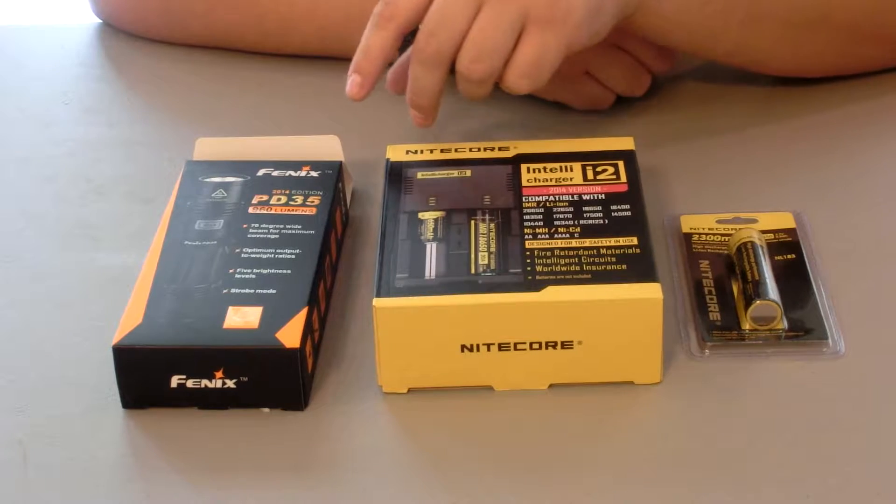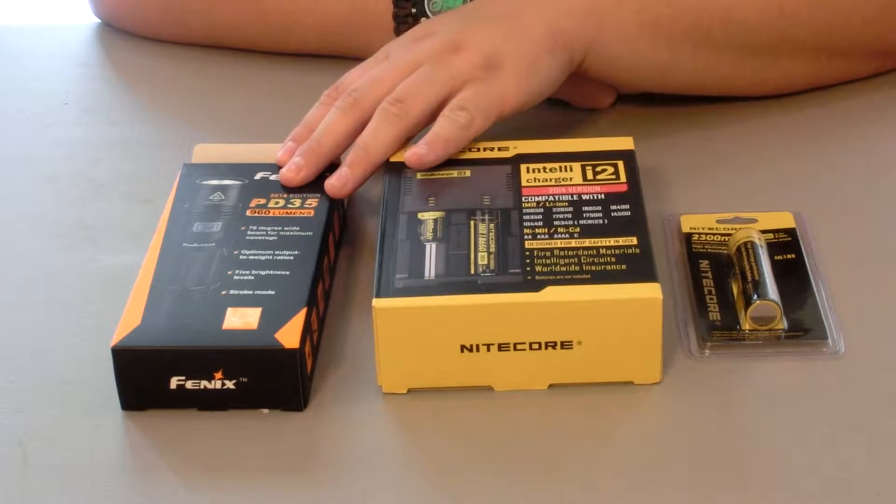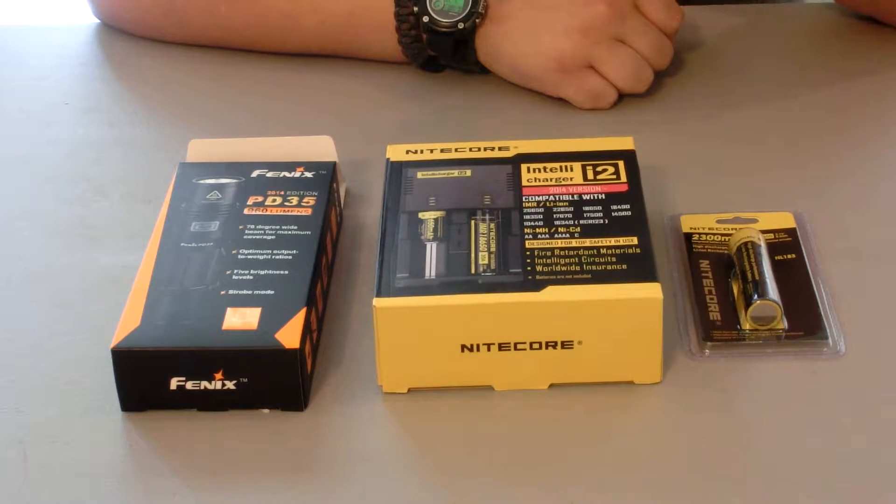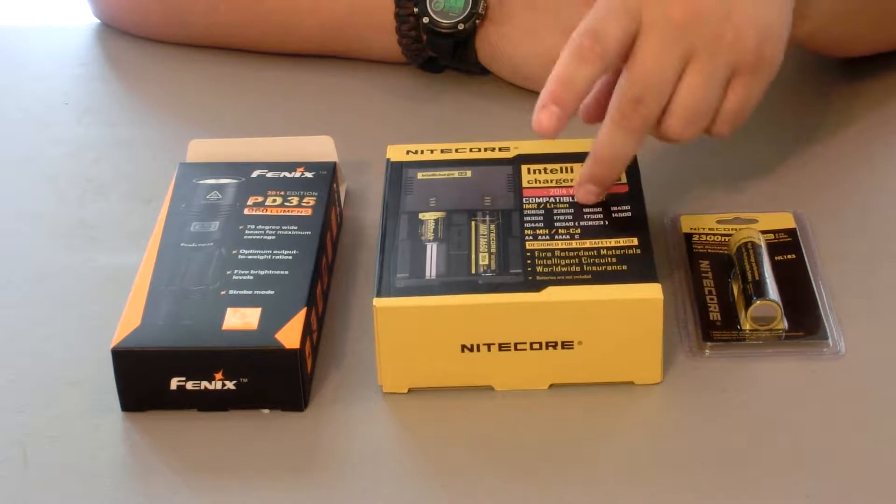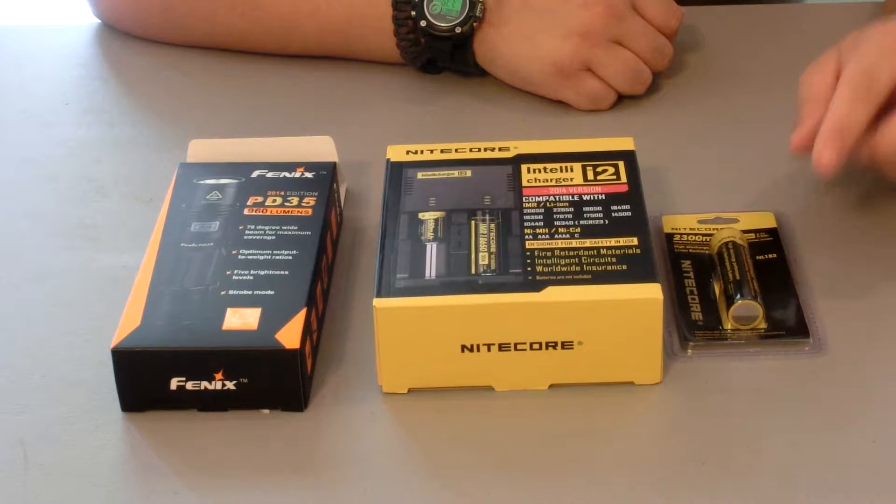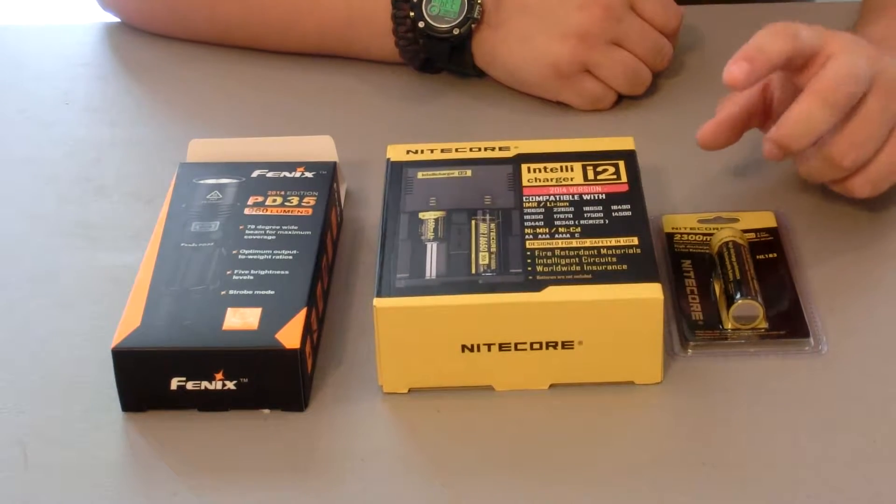For 90 bucks you can get a flashlight that comes with a lanyard, sheath, and a 25 lumen keychain light, along with the Nitecore Intellicharger i2 and a Nitecore 18650 battery. This is a lithium ion rechargeable battery.